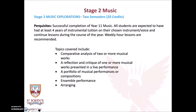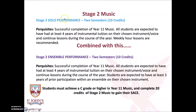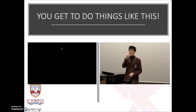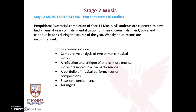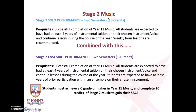You can still be part of an ensemble, or you can focus on an arranging component. Students who choose Stage 2 Music either choose just Stage 2 Music Explorations, or they choose solo performance and ensemble performance. You can, however, decide to choose all three. This means that a Year 12 student at the end of the year could potentially have 40 credits of music — Music Explorations, solo, and ensemble. What you can't do is only choose one of these 10-credit subjects, as you won't have a complete year of Stage 2 Music.